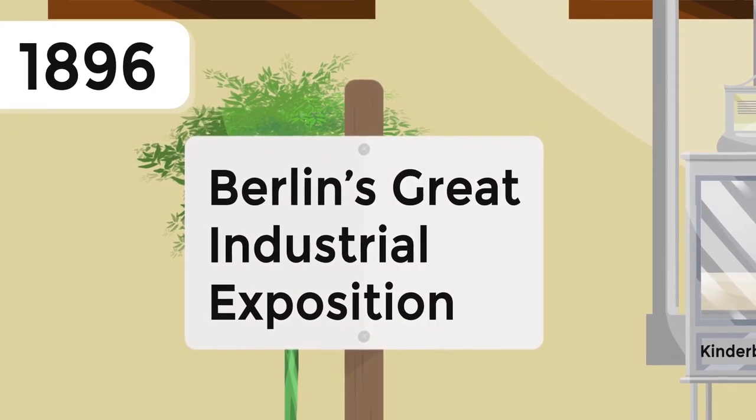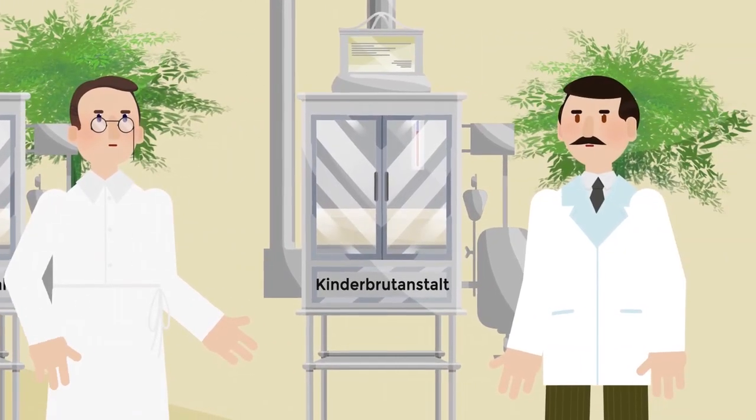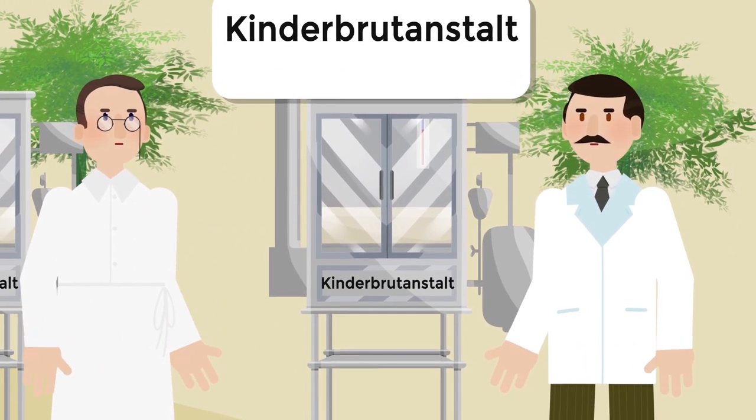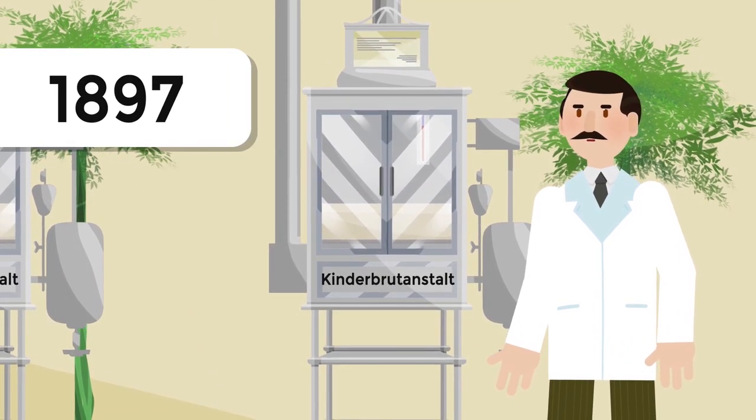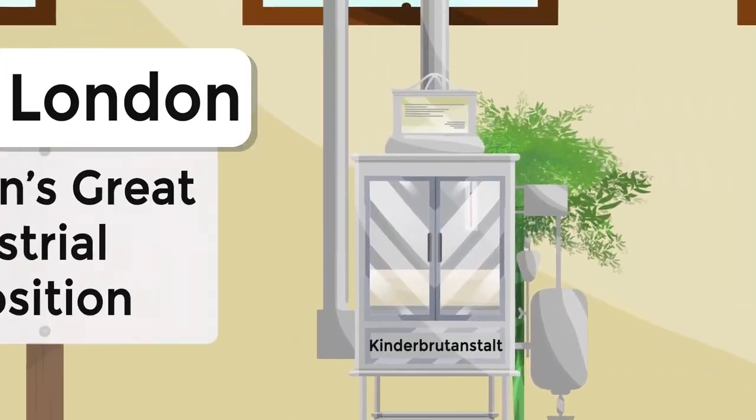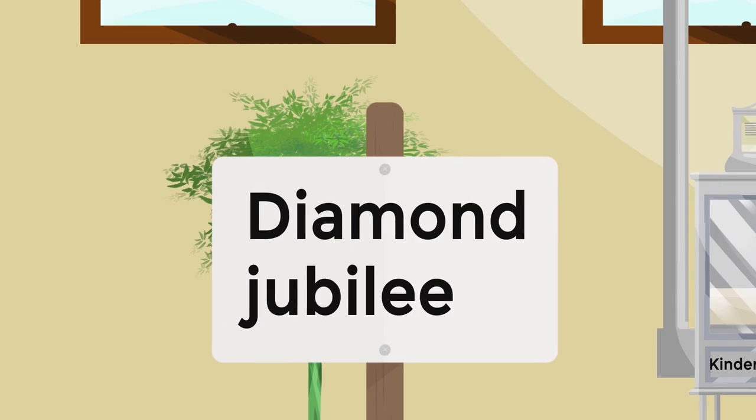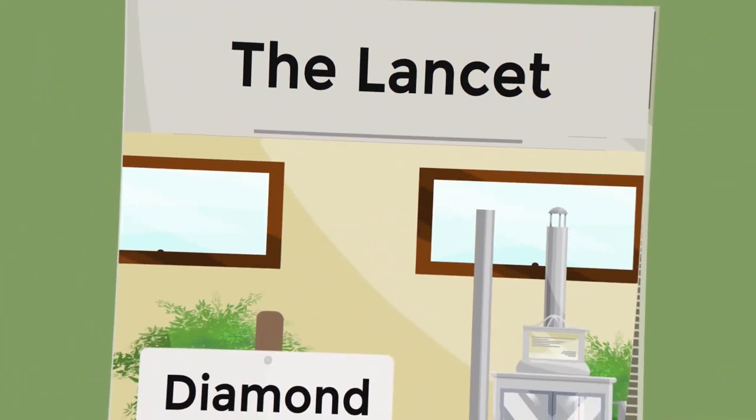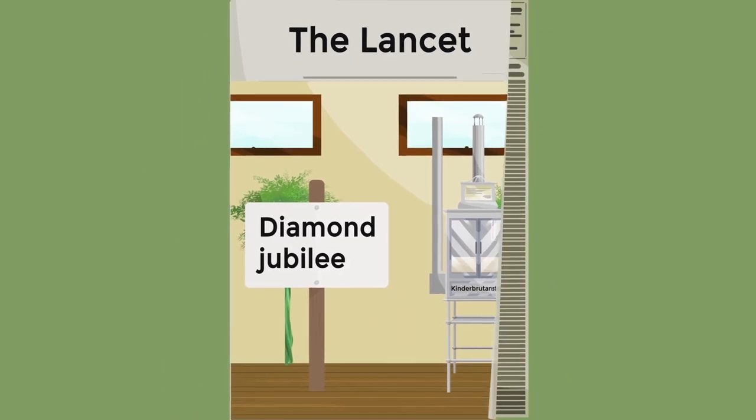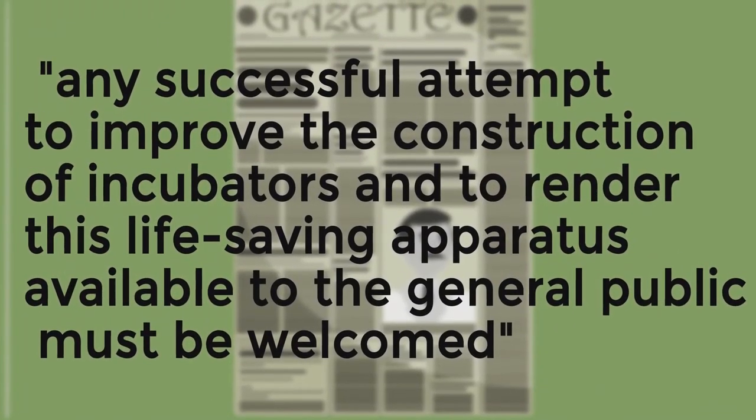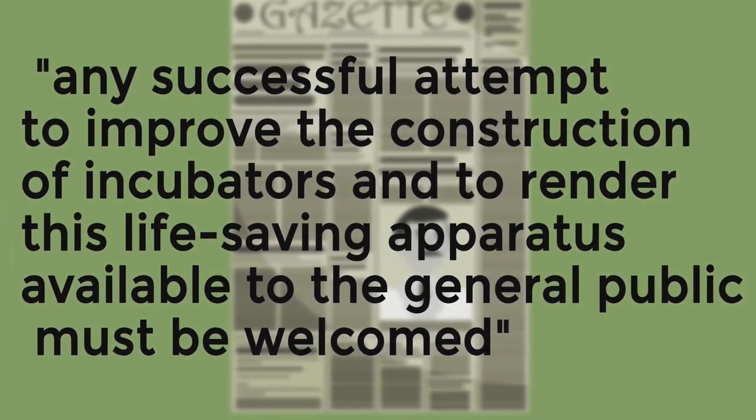In 1896, at Berlin's Great Industrial Exposition, they demonstrated their invention, the Kinderbrutensstalt or Children's Incubator. The exhibition was a success, and in 1897, Cooney was invited to London to celebrate Queen Victoria's Diamond Jubilee, where he held his first exhibition of incubators. The importance of the discovery was noted in the Lancet Medical Journal. Editors who attended Cooney's exhibition commented that, although use of incubators is still not widespread in England, the public should welcome every successful attempt to improve their design and make the device available to everyone.